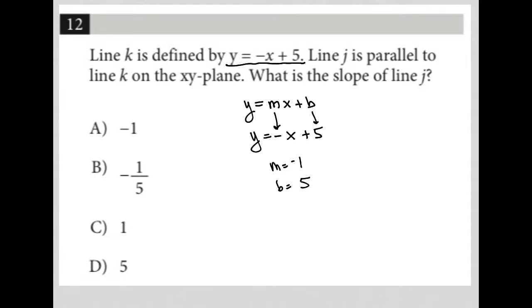The next sentence of the question says line j is parallel to line k. So when two lines are parallel, that means they have the same slope. Parallel means equal slope or equal m values. So the slope of line k is negative 1, but so is the slope of line j.